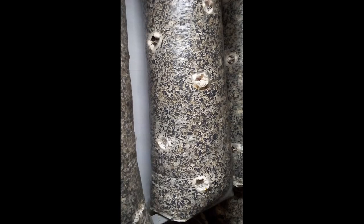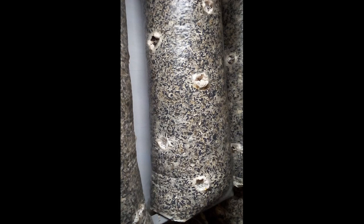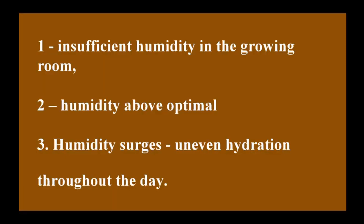Even if you move blocks from the incubator and they already have primordia, still most of them will form in the growing chamber itself. Humidity plays a key role in the development of primordia and pins, even more than in the formation of the mushrooms themselves. Primordia can die if the humidity in the room is too low or excessive, above the optimal level.